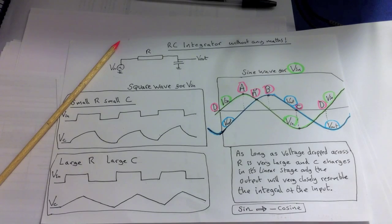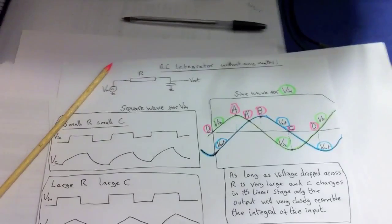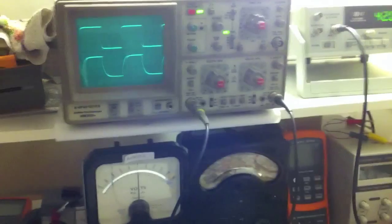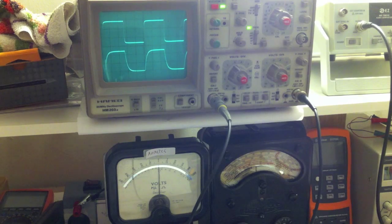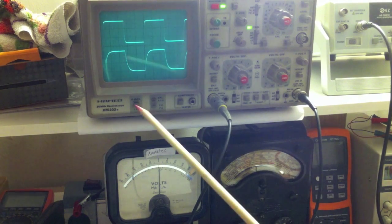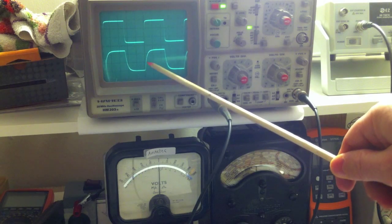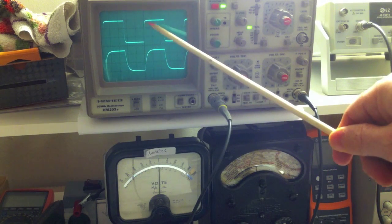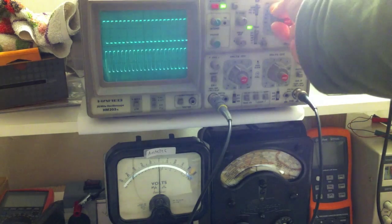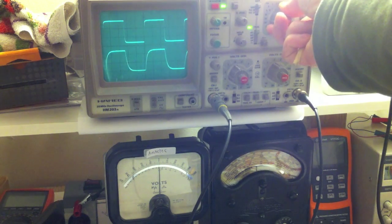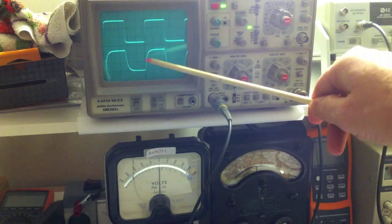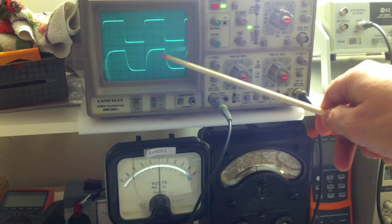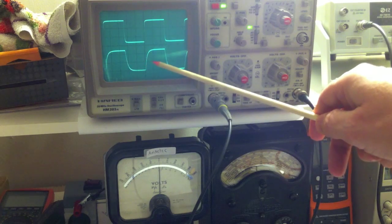So here's the scope now. You can see that at the moment the capacitor is charging up quite quickly — it's almost emulating the square wave. You can see there's a square wave here. If I increase the resistance value, I'm going to slow down the rate of charges entering the capacitor.